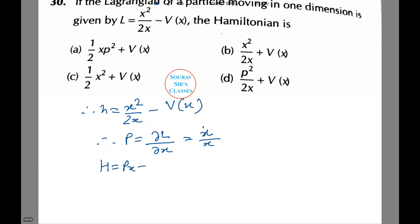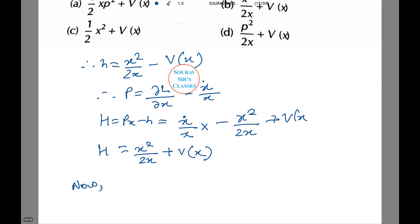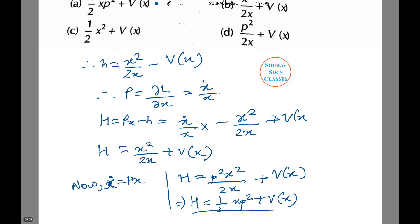Now, H = ẋ · (ẋ/x) − ẋ²/(2x) + vx. Since ẋ = px, substituting gives H = p²x/2 + vx, or H = ½ x·p² + vx. Thus this is our answer, which corresponds with option A.